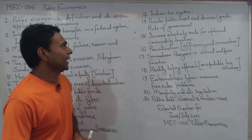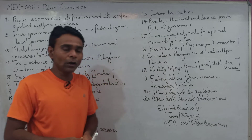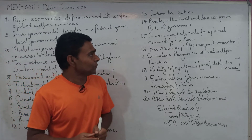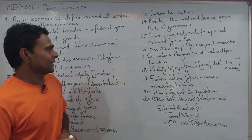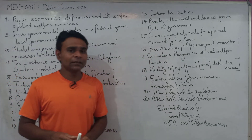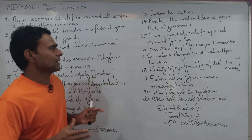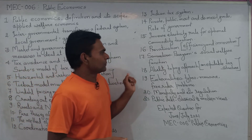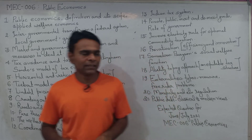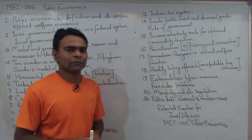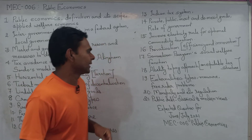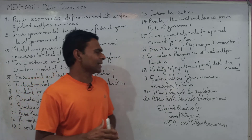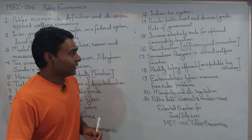Private, public, merit, and demerit goods — and what is the role of government in the provision of these goods? This involves the elasticity rule for optimal commodity taxation. Next is privatization, fostering efficiency and innovation. Also prepare social welfare function and the ability-to-pay approach for an equitable tax structure.